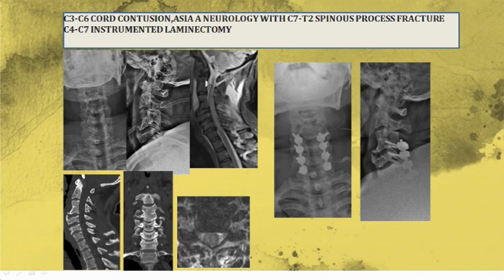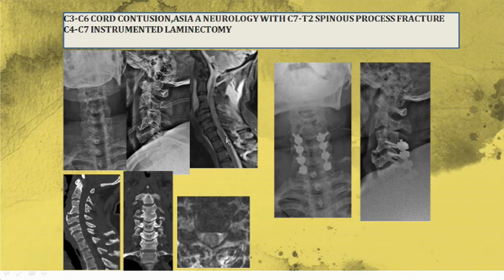There is another case where alignment is maintained but there is still cord compression visible on MRI — the cord signal shows edema at the injured level. This illustrates the role of steroids: to decrease the compression and edema of the spinal cord to some extent.